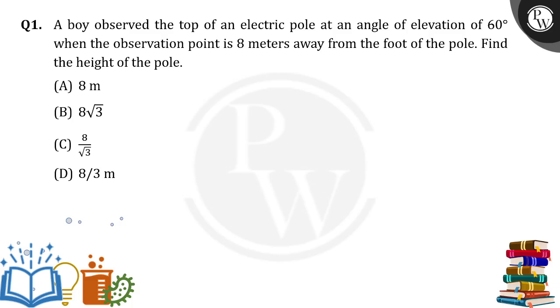Hello everyone, a boy observed the top of an electric pole at an angle of elevation of 60 degrees when the observation point is 8 meters away from the foot of the pole. Find the height of the pole.